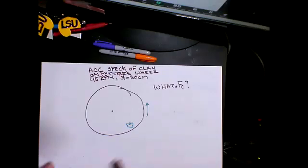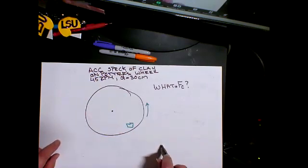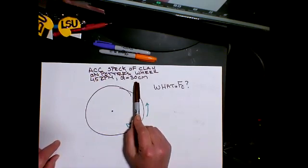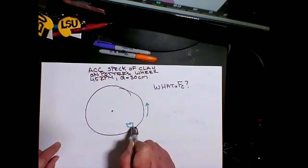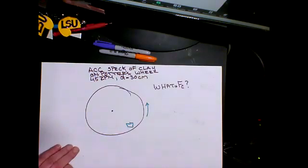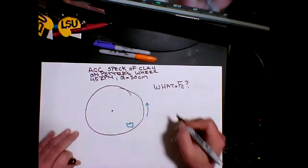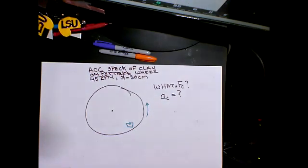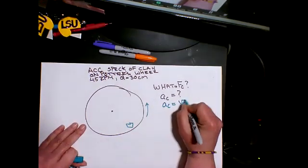The infamous speck of clay on a potter's wheel spinning at 45 RPMs. You're given that the diameter of the wheel is 37 centimeters. We'll put this at the rim, so the speck of clay is at the edge of the circle. First, it wants to know what is AC. Center-seeking acceleration is V squared over R.